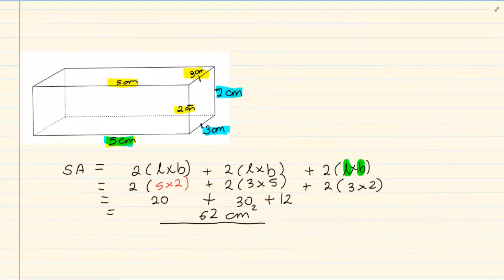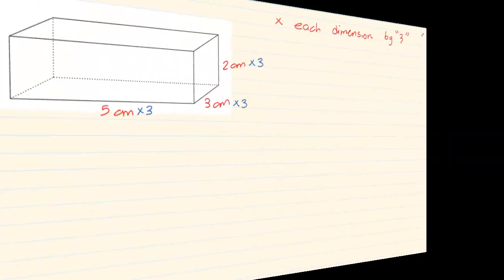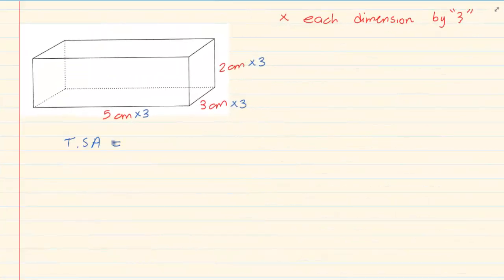You know that the surface area of this drawing was 2 into length times breadth plus 2 into length times height plus 2 into breadth times height. Now what has happened? We are going to be using the same formula but now we are going to have 2 and instead of 5 we are going to have 15 times instead of 3 we are going to have 9. Can you see they are changing.